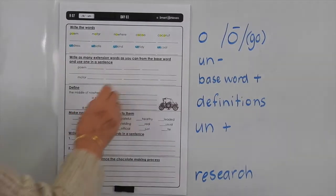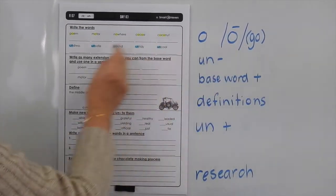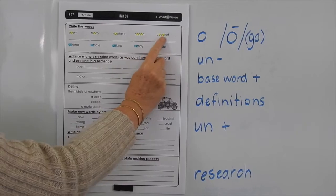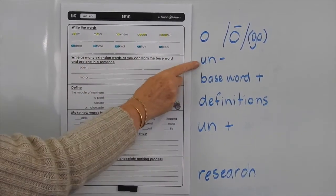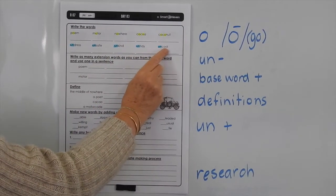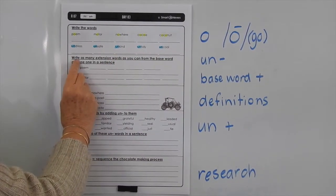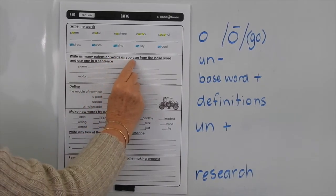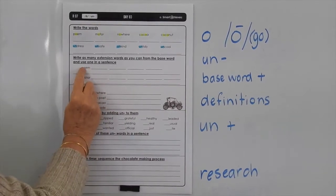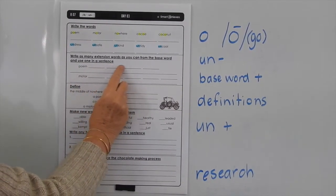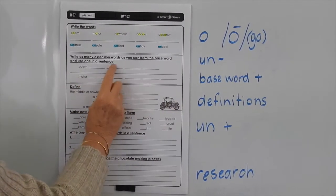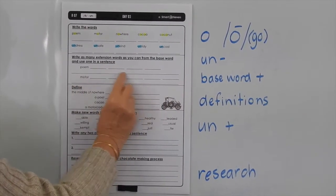In this list we've got the O making its long sound as in go — poem, motor, nowhere, cocoa and coconut. Then we've got the prefix un — undress, unsafe, unkind, untidy, uncool. What we'd like you to do here is write as many extension words as you can from the base word and use one in a sentence. Look at the word poem, see how many word extensions you can make from that. Same with motor — write one of those extended words in the sentence.